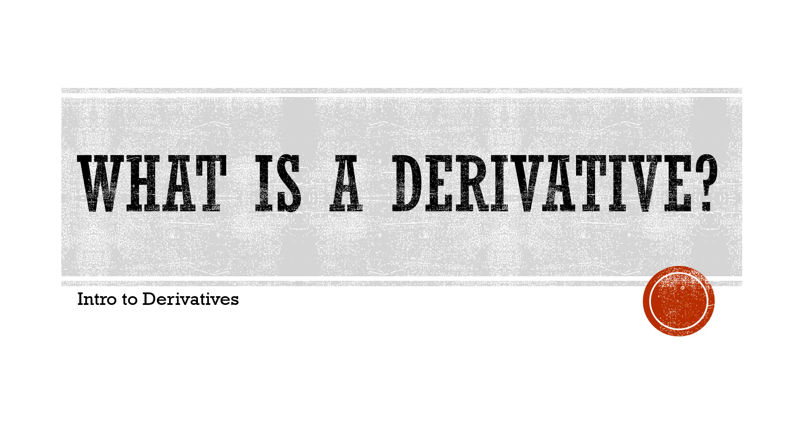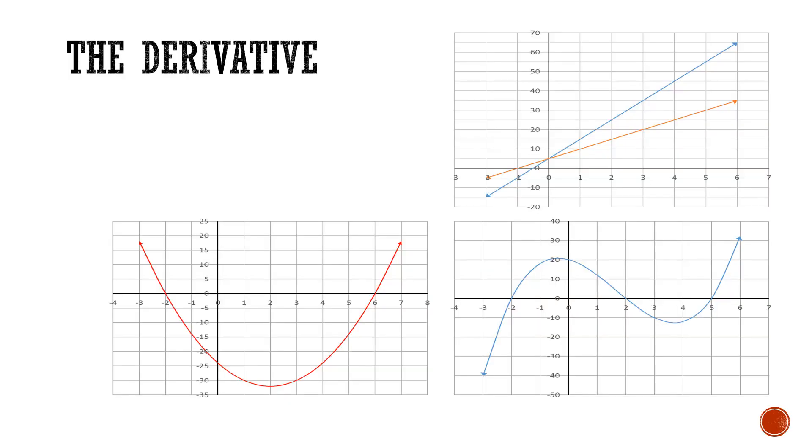So in our previous video, we talked about the slope of a function. We saw that in a linear function the slope stayed constant. With a quadratic function, it went from negative to zero to positive slope. So we could see that the slope was changing everywhere.